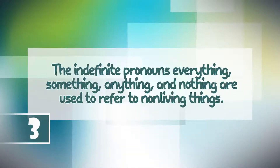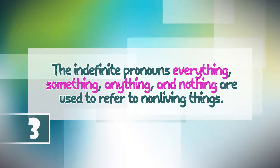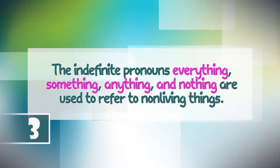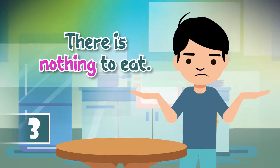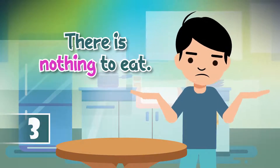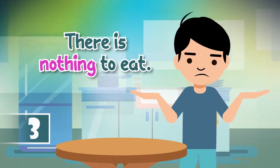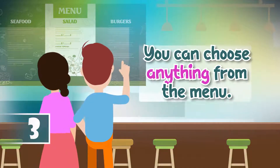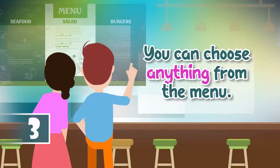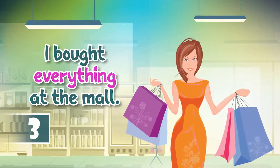The indefinite pronouns everything, something, anything, and nothing are used to refer to non-living things. Examples: There is nothing to eat. You can choose anything from the menu. I bought everything at the mall.